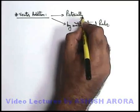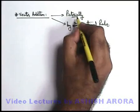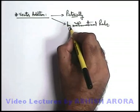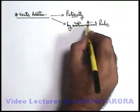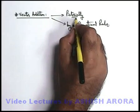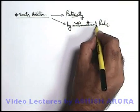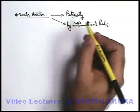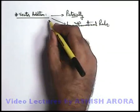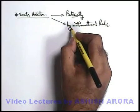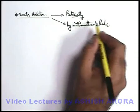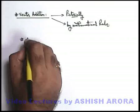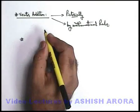Pictorial addition is just a way to understand how vectors are added. When we add vectors by mathematical rule, it is accompanied by pictorial addition, because by mathematical rule we mathematically analyze and obtain the result of vectors — that means after addition, what vector we are going to get. By mathematical rules we find out its magnitude as well as direction. So first let's see how we'll add pictorially.